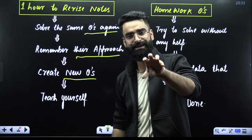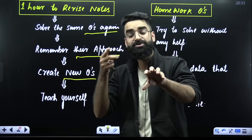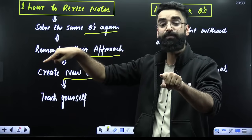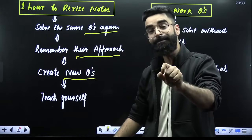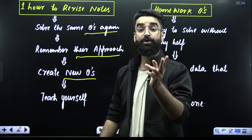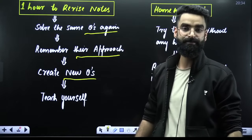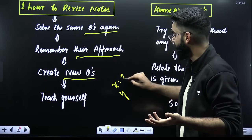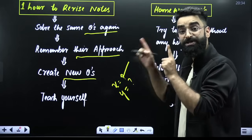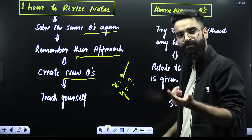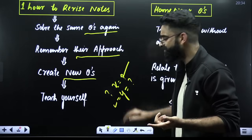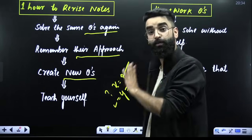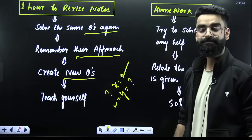Look at the same questions again and think differently. Try to create two more questions. You are not going to use any book for that — use your brain to create different types of questions out of the same ones your teacher solved. For example, if your teacher gave you the value of X and asked you to find Y, think: what if Y was given and X was to be calculated?